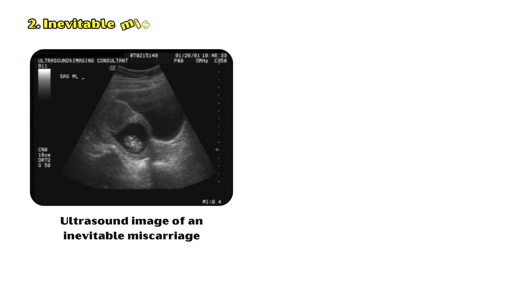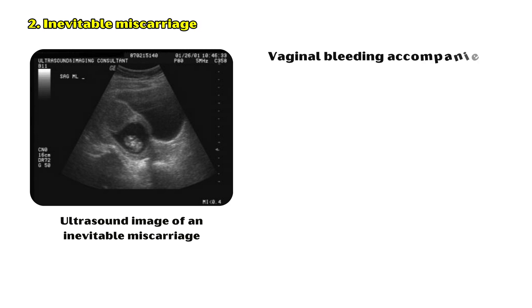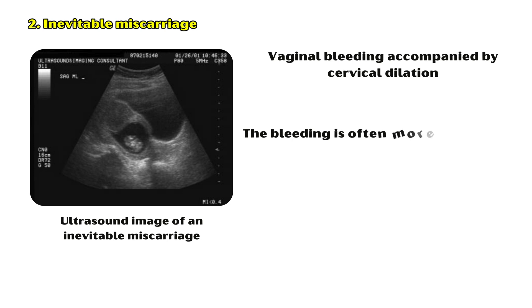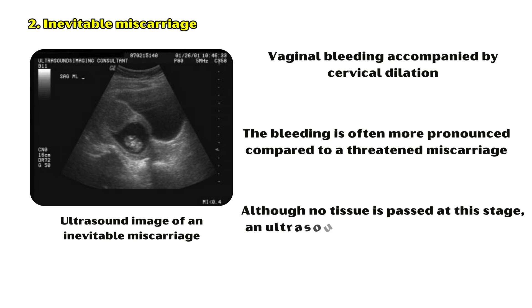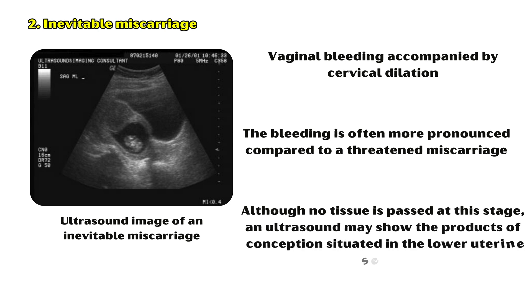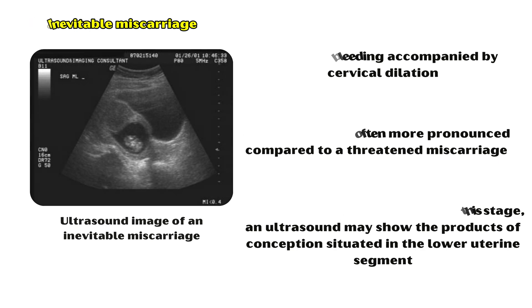Inevitable miscarriage: In this stage, there is vaginal bleeding accompanied by cervical dilation. The bleeding is often more pronounced compared to a threatened miscarriage. Although no tissue is passed at this stage, an ultrasound may show the products of conception situated in the lower uterine segment.